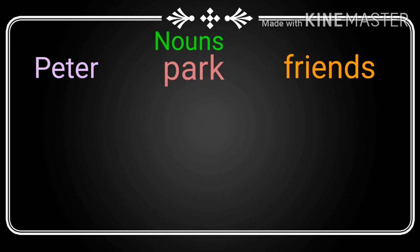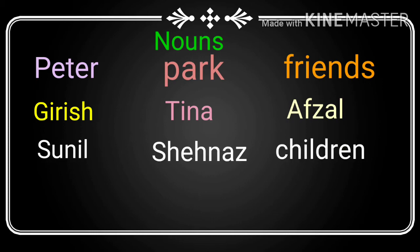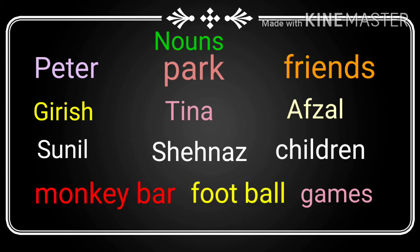Now, let us read all the nouns that we have underlined. Peter. Park. Friends. Girish. Tina. Afzal. Sunil. Shainaz. Children. Monkey Bar. Football. Games.